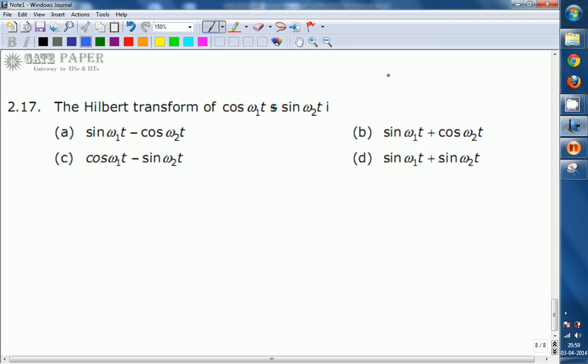This is a question from the previous GATE paper in the subject of communication system in the year 2000. The question is simply the Hilbert transform of cos ω₁t + sin ω₂t is: